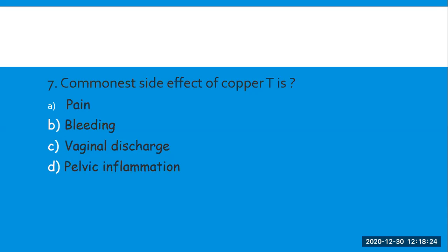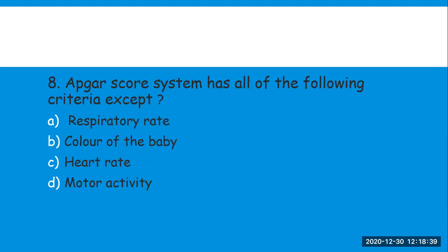Next question: the commonest side effect of Copper T. As we all know, Copper T is a contraceptive method. Options are: A) pain, B) bleeding, C) vaginal discharge, D) pelvic inflammation. The right answer is bleeding.